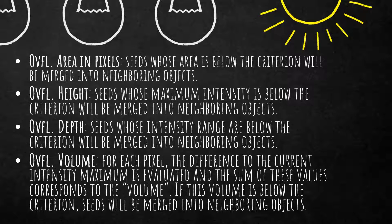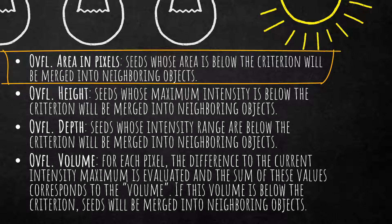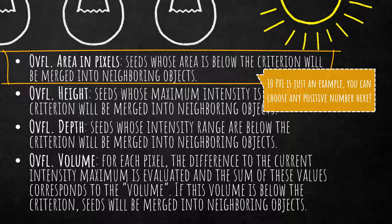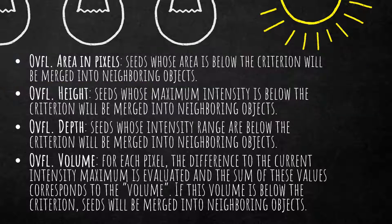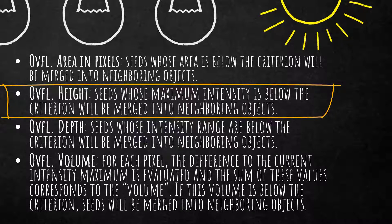The first criterion is called overflow area in pixels. Objects are merged based on area: if they touch a neighboring object and are smaller than 10 pixels, they'll be dissolved into the neighboring object, resulting in fewer image objects. The second criterion is overflow height — if the seed source maximum intensity is below the criterion value, it will be merged into neighboring objects. The intensity maximum is the maximum pixel value of the layer defined, and it works only on one grayscale layer.